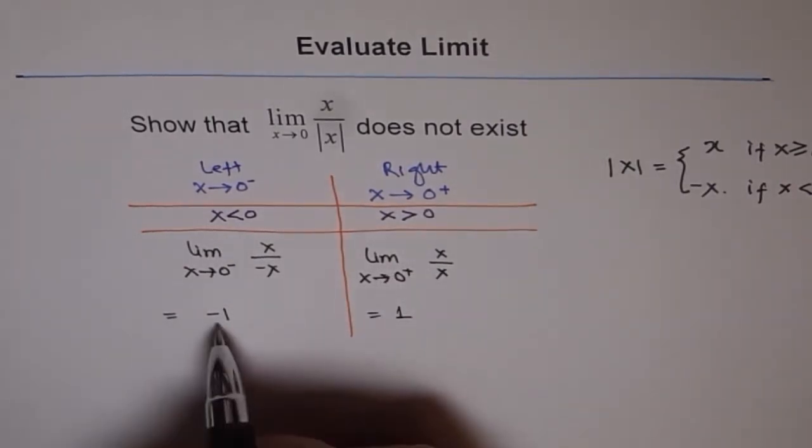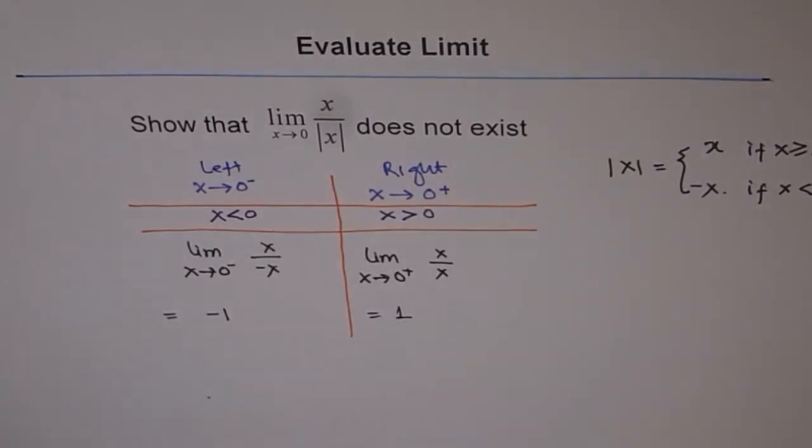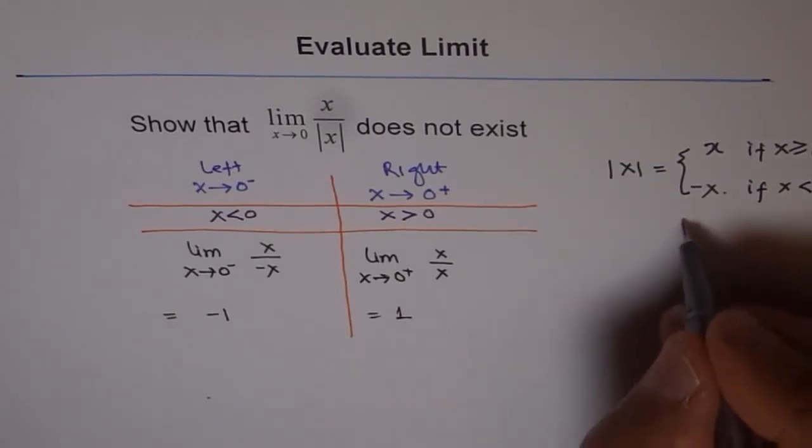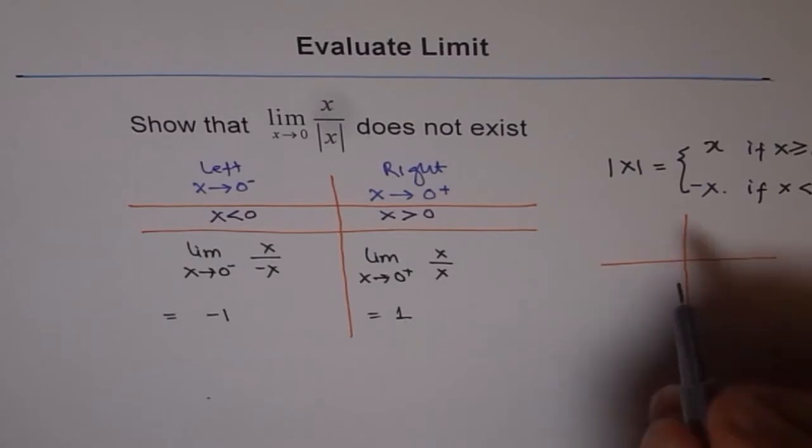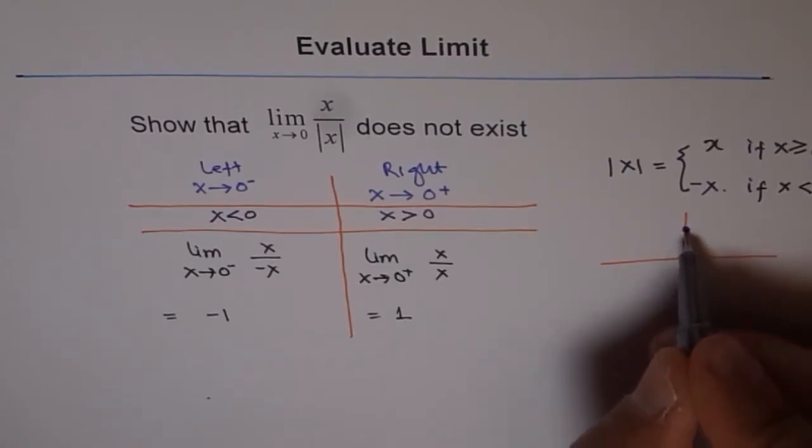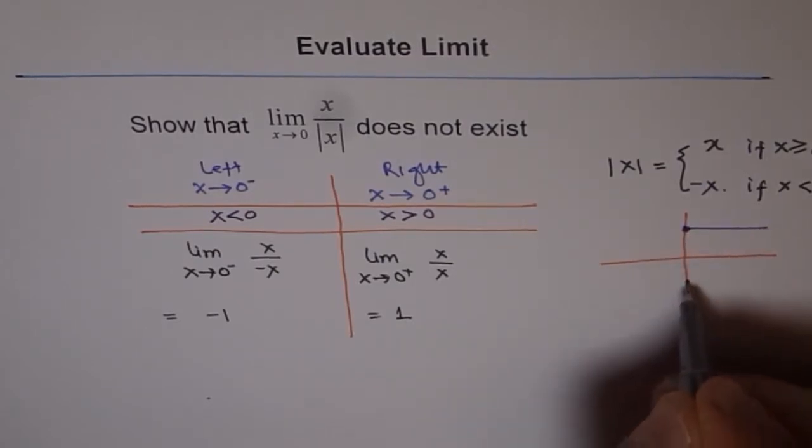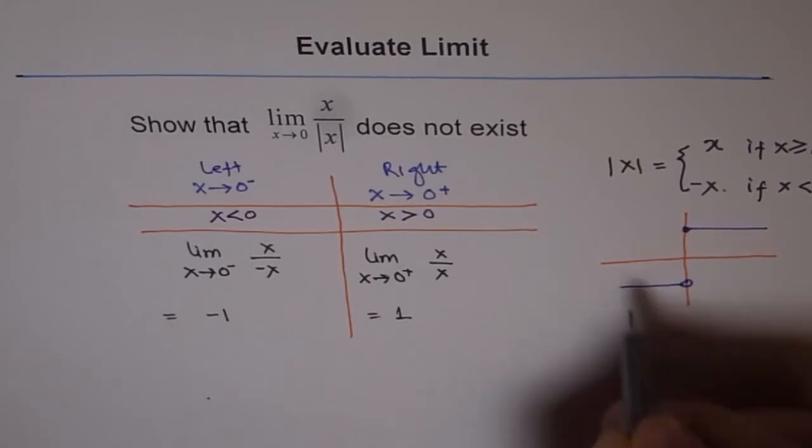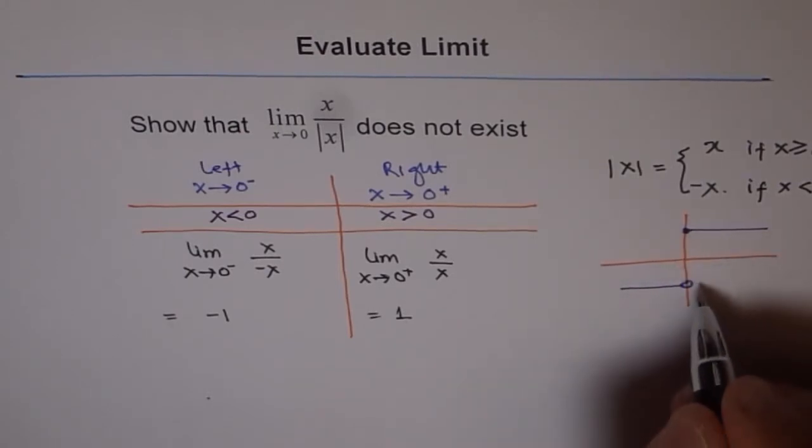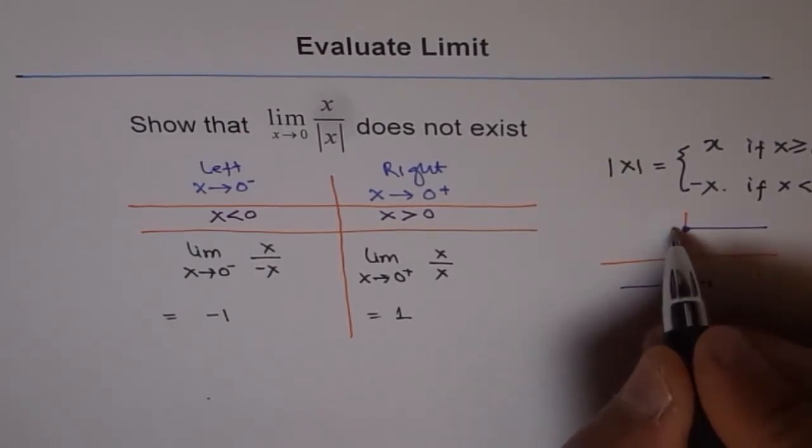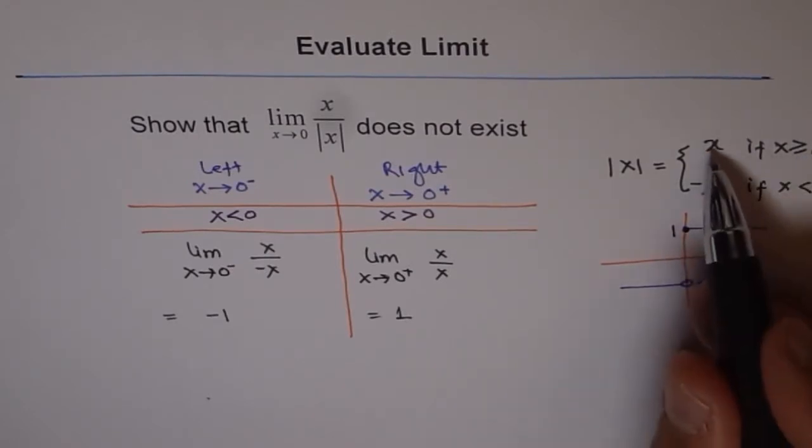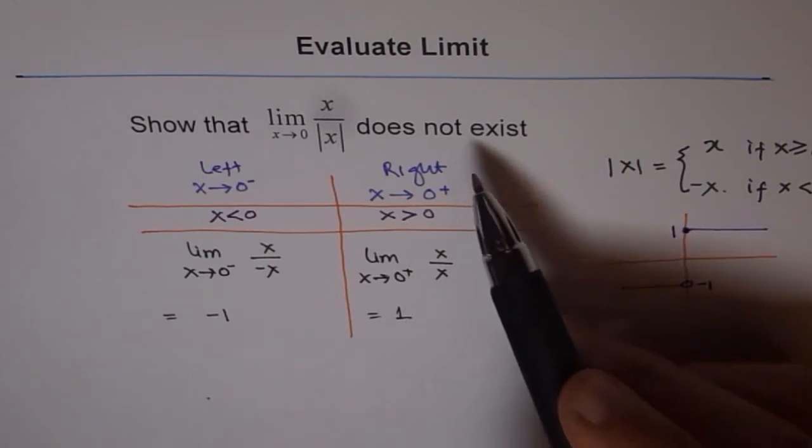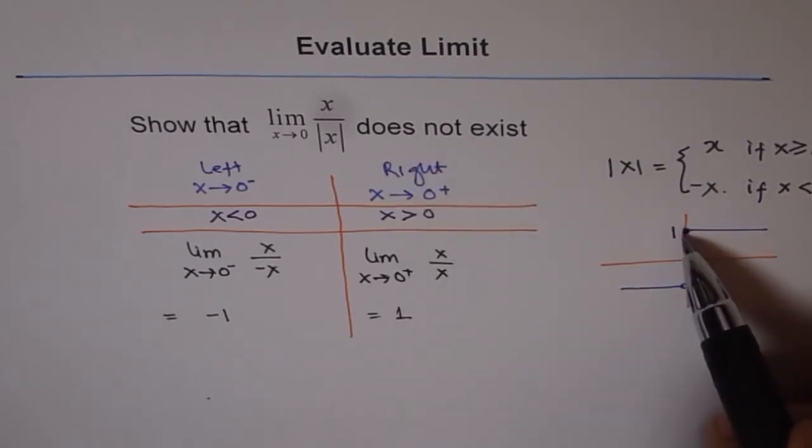So this limit is plus 1, and this limit is minus 1. If you sketch a graph of this, you will get like this. So you have a hole here at minus 1, and this is plugged in. So the value of function for greater than or equal to 0 is plus x, so x divided by plus x will give us plus 1, right?